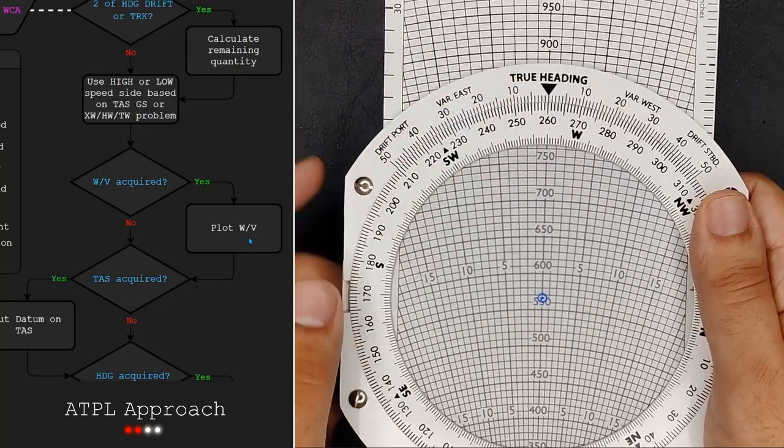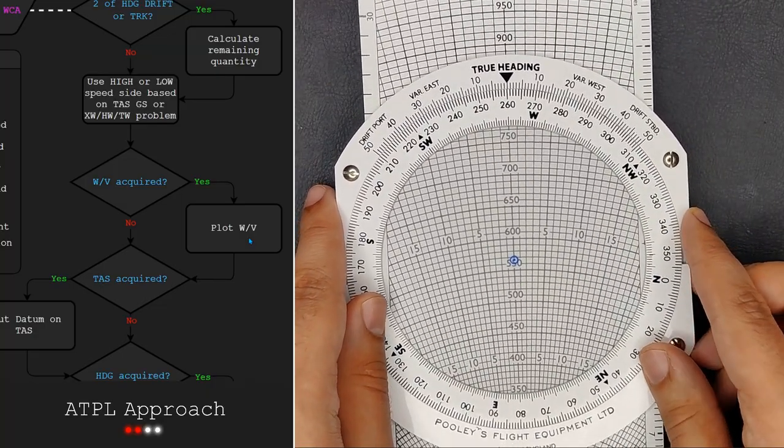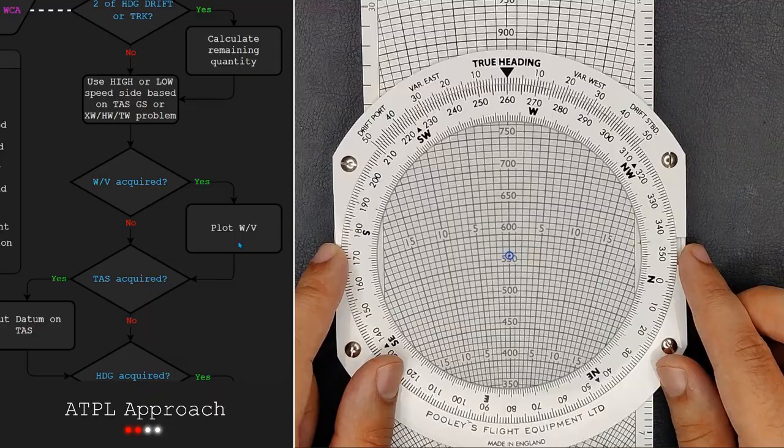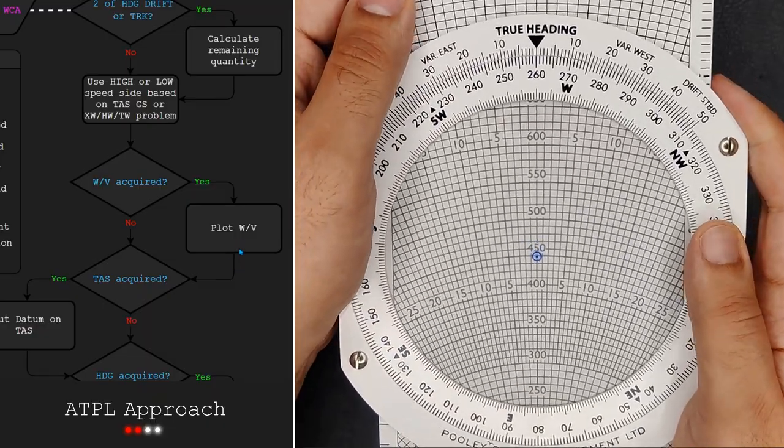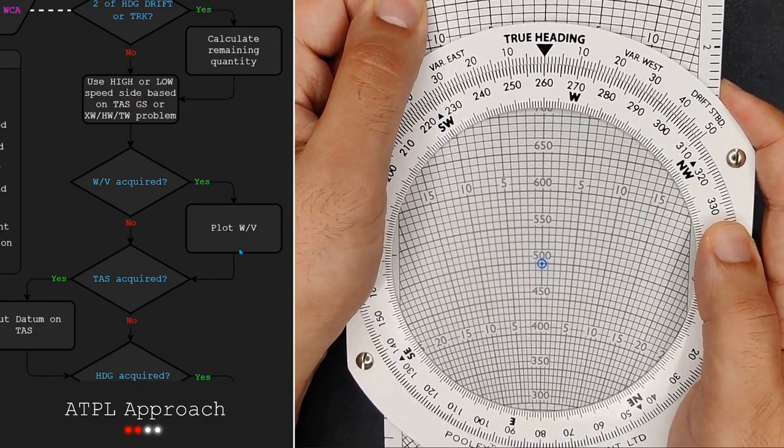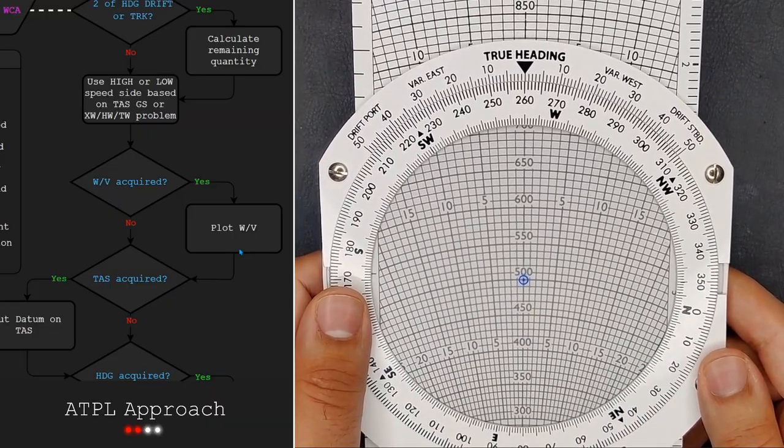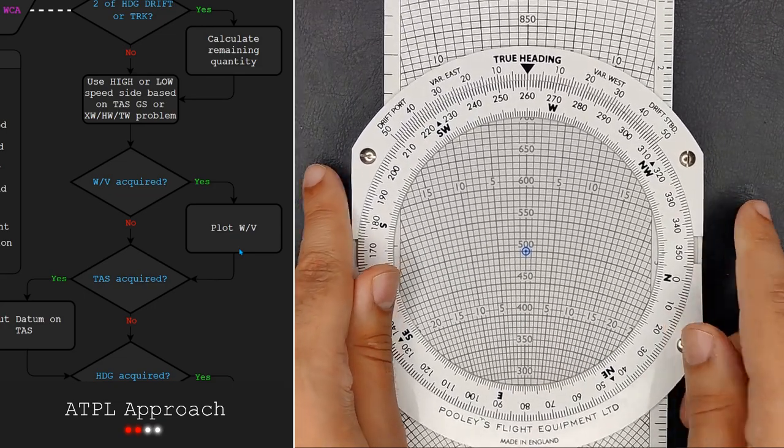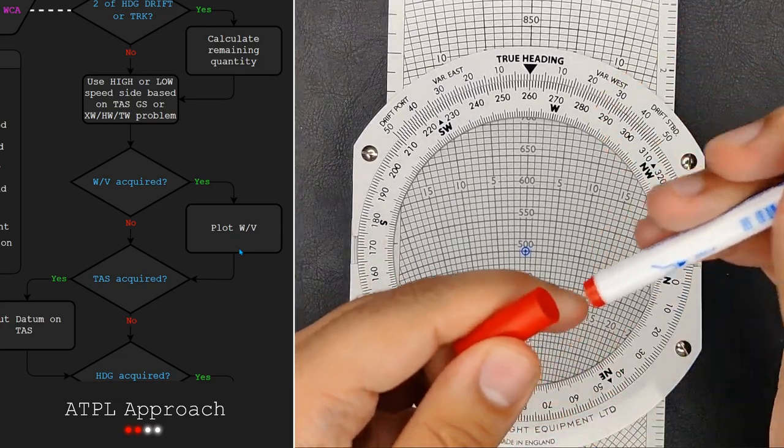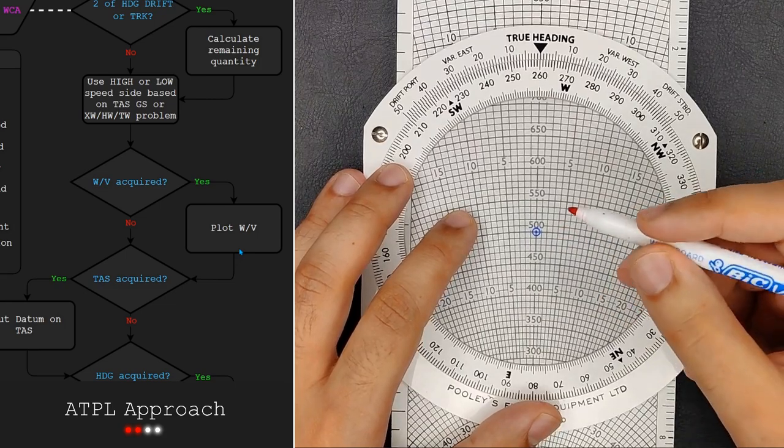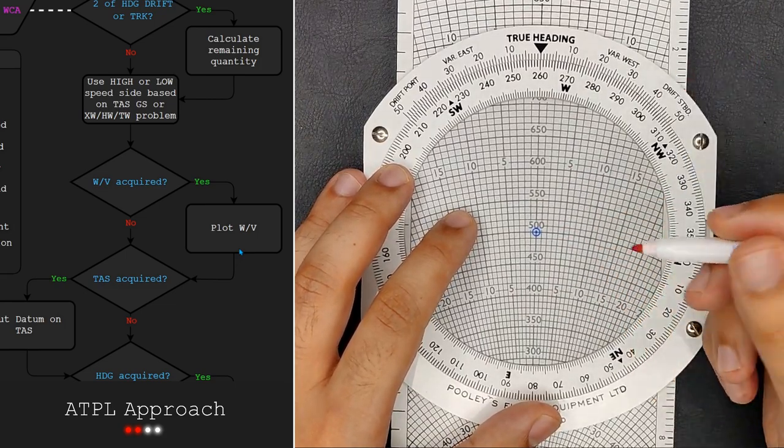There we go, let's put underneath our index here. And then we put the datum on a nice number. I'm going to choose 500 there. And then we subtract the wind strength of 90 knots and plot there. I recommend doing this always as a dot, not a cross. And my pen cap just flew off.